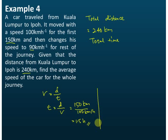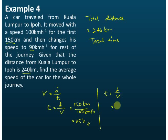For the rest of the journey, the distance is 240 kilometers minus 150 kilometers, because the total distance is 240 kilometers and it has already traveled 150 kilometers. So the remaining distance is 90 kilometers. The time taken equals the distance divided by the speed, which is (240 minus 150) kilometers divided by the speed.